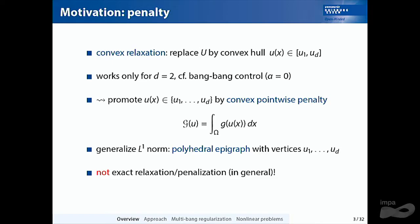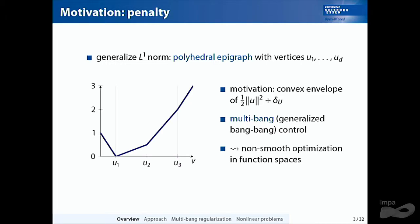Next to polyhedral constraints, where a solution is always attained on the boundary of the set, the same principle applies here — not just on the boundary but at a corner of the admissible set. This convex hull construction comes from the convex envelope of the quadratic norm plus the indicator function of the discrete non-convex constraint, where this term is zero if u equals one of u1 to uD, or infinity otherwise. Since this generalizes bang-bang control, I like to call it multi-bang control.